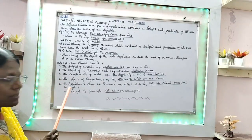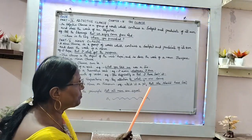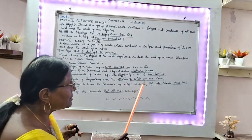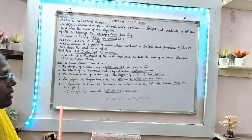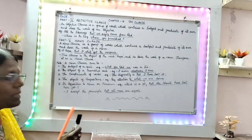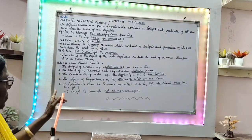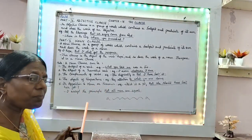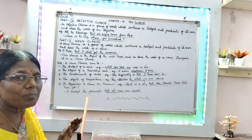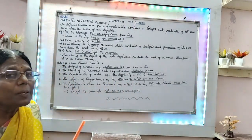The last use is as an apposition to a noun or pronoun. Example: 'Isn't it a pity that she should have lost her job?' Here, 'that she should have lost her job' is the noun clause coming as an apposition to the noun. One more example: 'I accept the principle that all men are equal.' Here, 'that all men are equal' is the noun clause.